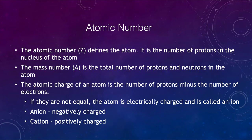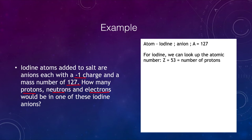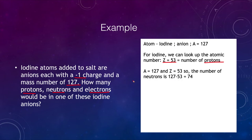Let's look at an example for a specific atom — iodine. Iodine atoms added to salt are anions with a negative one charge and a mass number of 127. We want to know how many protons, neutrons, and electrons are in one of these iodine anions. We can look up the atomic number of iodine, which is 53 — that tells us the number of protons. Then given the mass number of 127, the difference between these two gives us the number of neutrons: 127 minus 53 equals 74 neutrons.